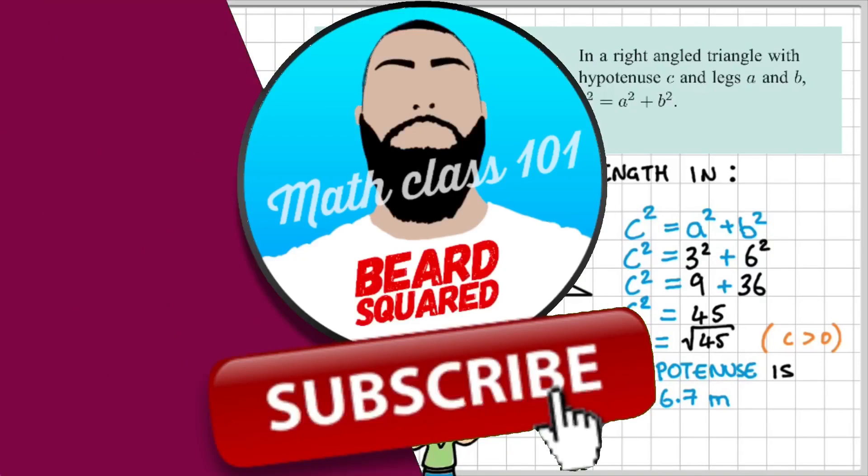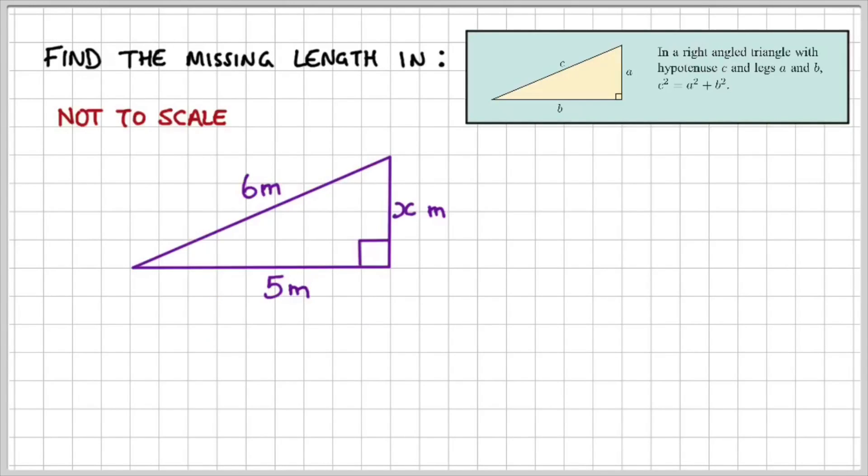Let's move on to our final example. It says, find the missing length in the following triangle. So we have 5 meters by 6 meters by X meters. So step one, we need to find out where the hypotenuse is and that should be opposite our right angle. So that's our hypotenuse. We're going to label that C, which means the other two lengths are going to be A and B.